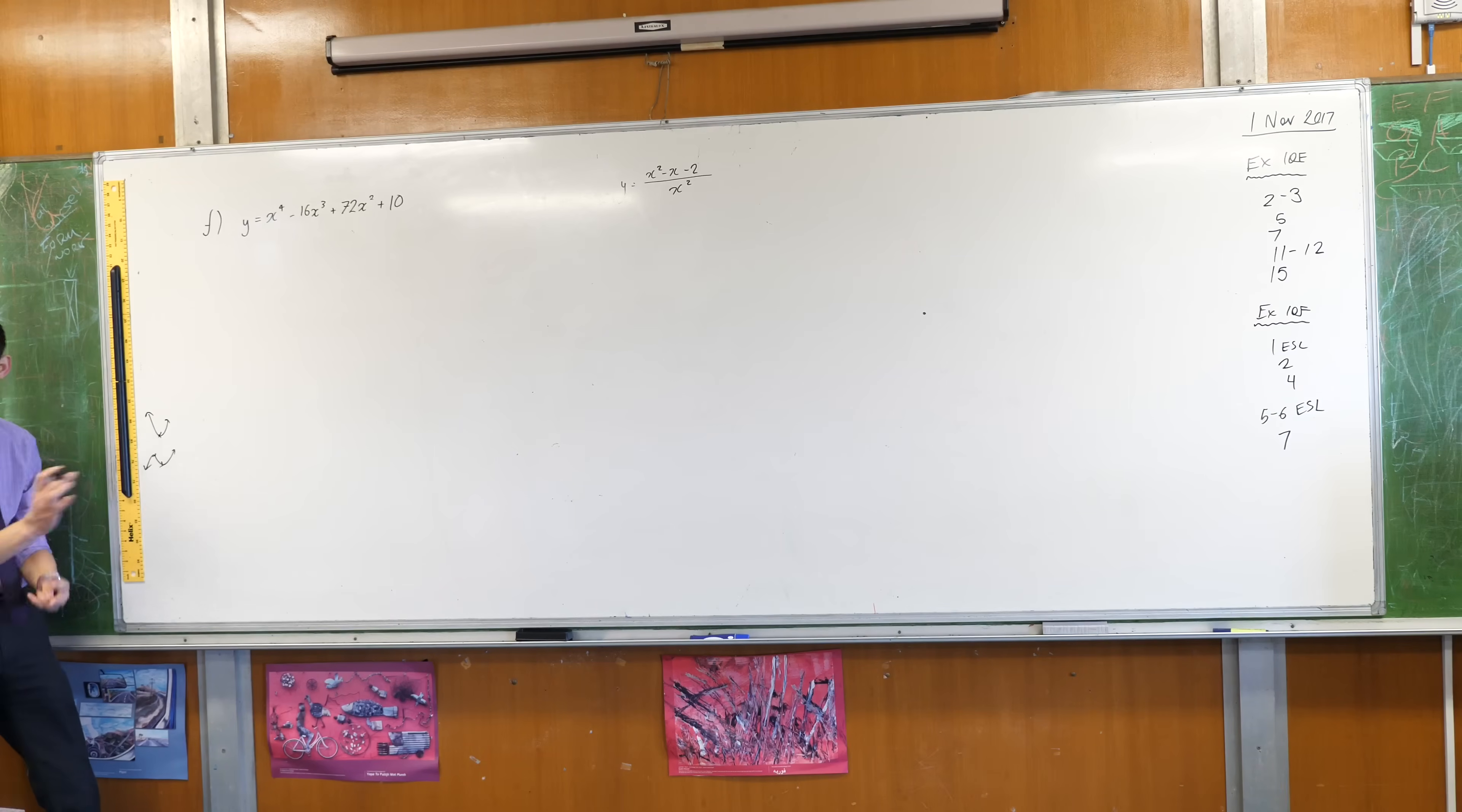This is a cubic with power 3 so therefore its derivative has a power of 2 which is why we often find two stationary points. Therefore, if you have a quartic then its derivative will have a power of 3 which is why you can expect that there will be one or two or three stationary points.